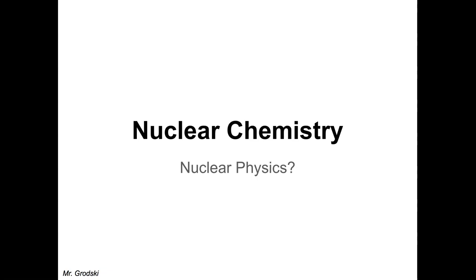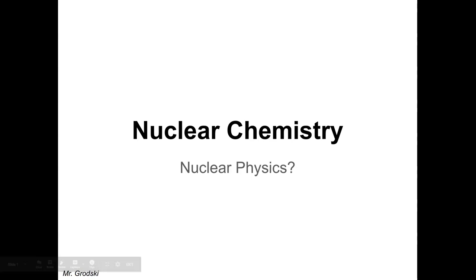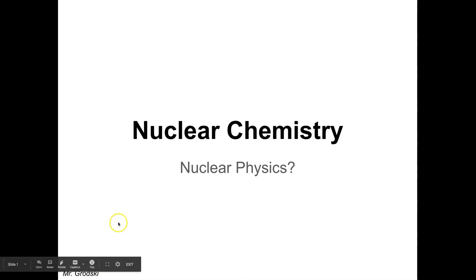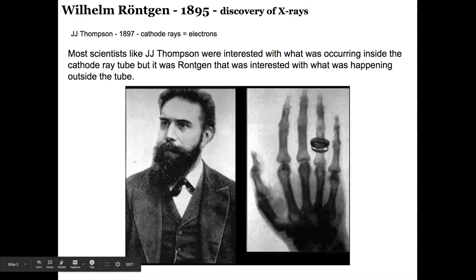Nuclear chemistry is about changes of the nucleus and its origins. Most chemistry teachers who have to teach this do it last to show that contrast. When we see nuclear equations — not chemical reactions — we'll see how different they are. So let's begin our discussion of nuclear chemistry, or physics, by talking about where it started and where it came from.